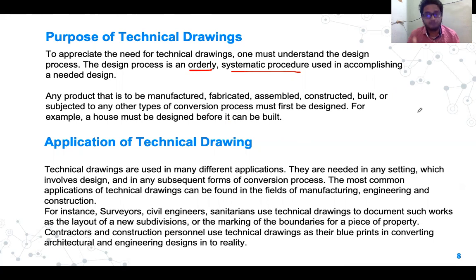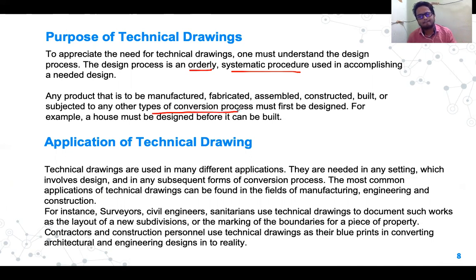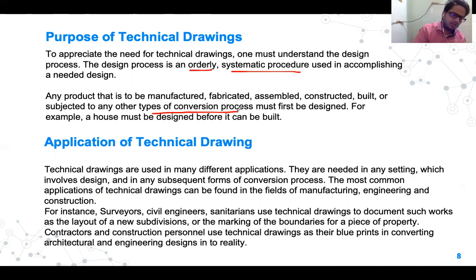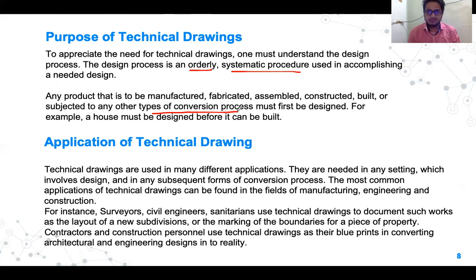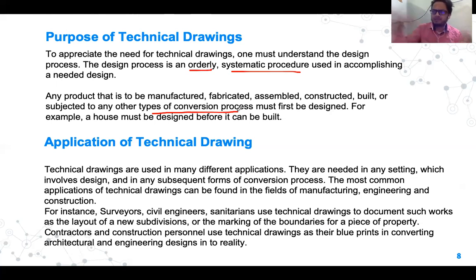Any product that is to be manufactured, fabricated, assembled, constructed, or subjected to any type of conversion process — in any manufacturing industry, engineers have some drawing in hand. That engineer has to convert the drawing into the actual component using different manufacturing processes — so conversion is taking place, from drawing to the actual component using some manufacturing process. For any conversion process, design is a must. Design determines dimensions: suppose the person who designed this mouse must have known the palm length of general people and done surveys so fingers are comfortably placed on it.